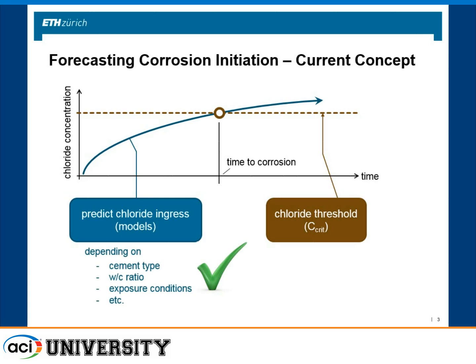If we look into the literature, the current state of the art permits predicting chloride ingress depending on parameters such as cement type, water-cement ratio, porosity, and exposure conditions. We know that these influence chloride ingress and we can fairly reliably predict it. It was always believed that the same can be done for chloride threshold values — that a different threshold could be specified for a different water-cement ratio or cement type.